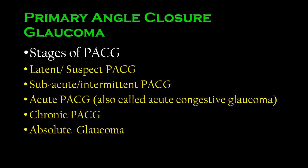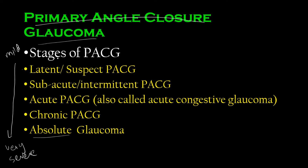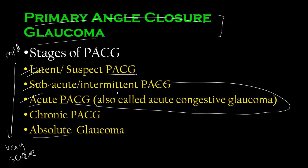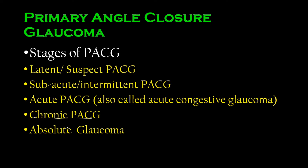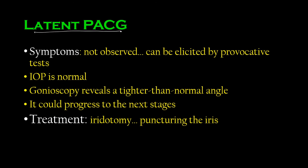Let's talk about the stages of primary angle closure glaucoma — these are very important. Unlike primary open angle glaucoma, PACG can come in five different stages: latent PACG, sub-acute PACG, acute PACG, chronic primary angle closure glaucoma, and the end stage — absolute glaucoma.